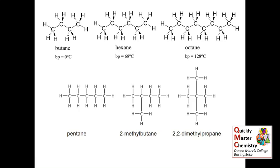Another factor is chain branching. This time we've got three molecules, each with five carbons in the chain, ranging from the straight-chain pentane through to the very branched 2,2-dimethylpropane. Again, if you took pairs of these molecules, you would get instantaneous dipole-induced dipole intermolecular bonds between them. And yet if we look at the boiling points, we see a difference again. This time, the answer lies with the idea of packing. Pentane, with its straight chains, the molecules can pack quite closely together. This means that the intermolecular bonds between a pair of pentane molecules can have more effect, because they can pack more closely. 2,2-dimethylpropane, with its branched structure, the molecules won't pack so closely, and so the intermolecular bonds between a pair of those molecules won't have so much effect.